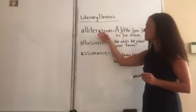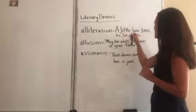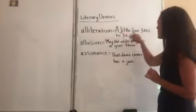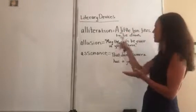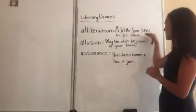Alliteration is the repetition of the same consonant sound at the beginning of words. For example, a little lion likes to lie down. It's a repetition of the same consonant sound at the beginning of words. You can notice it does not have to be every word in the sentence.